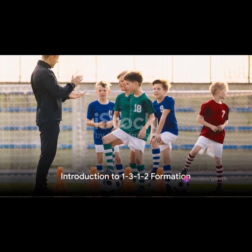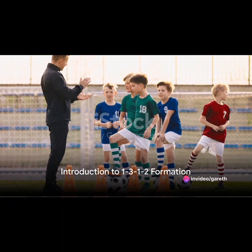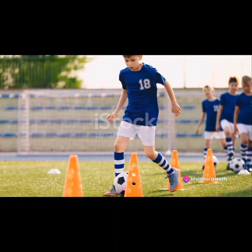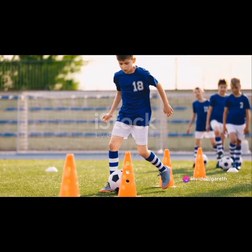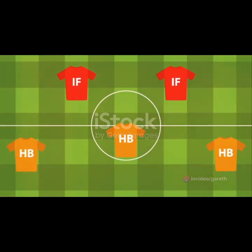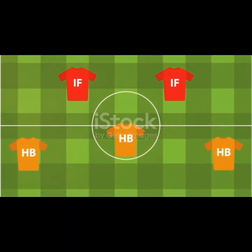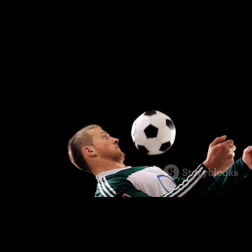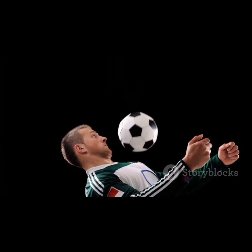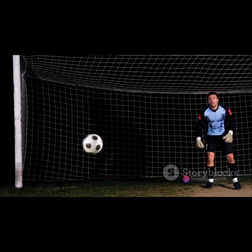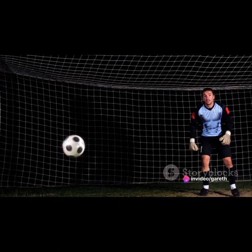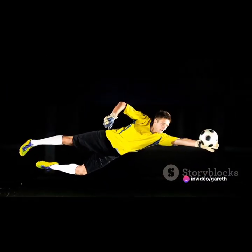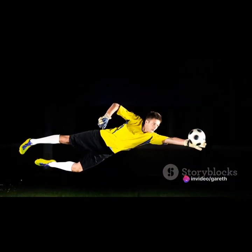In youth football, coaches often experiment with various formations to optimize their team's performance. One such formation gaining popularity is the 1-3-1-2 setup. The 1-3-1-2 formation consists of one goalkeeper, one central defender, two wingbacks, one central midfielder, and two strikers.